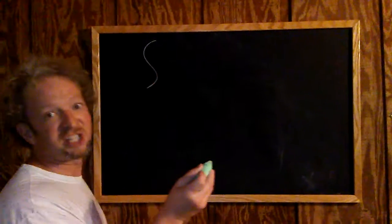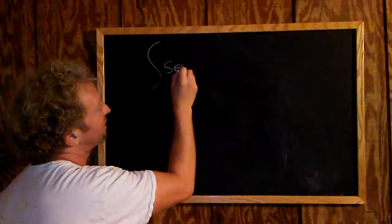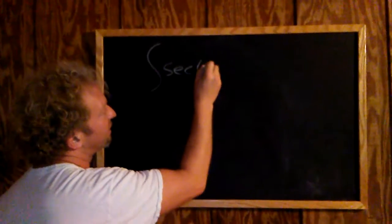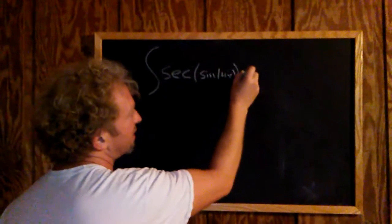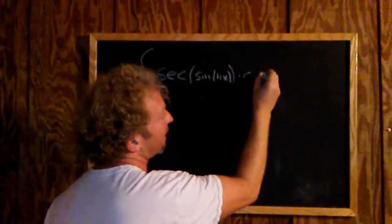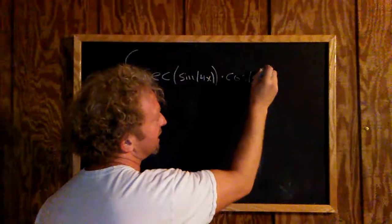An integral involving a secant function. We have the indefinite integral of secant of sine of 4x times the cosine of 4x dx.